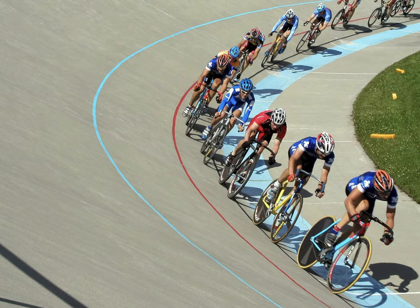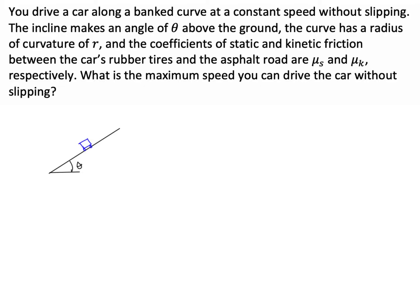Now that we have that background, let's look at a problem. Let's say that you drive a car along a banked curve at a constant speed without slipping. The incline makes an angle of theta above the ground, and the curve has a radius of curvature r. We also know that the coefficients of static and kinetic friction between the car's rubber tires and the asphalt road are mu_s and mu_k respectively. Our job is to figure out the maximum speed you can drive without the car slipping. Here's a picture of the car — you can think of it as traveling into the page, mapping out a circular path. The distance between the center of the circle and the center of mass of the car is r.